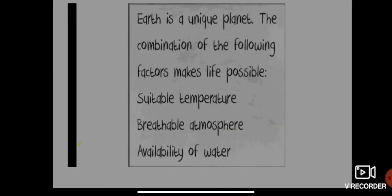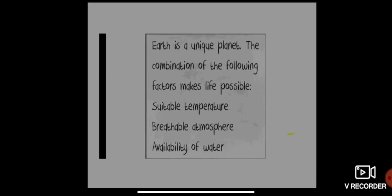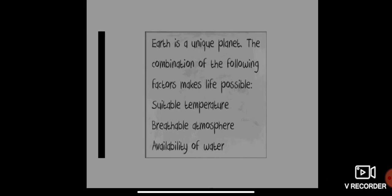Earth is a unique planet because the combination of three factors makes life possible: its suitable temperature, its breathable atmosphere, and the availability of water. These are what make Earth a unique planet compared to all other planets in the solar system.